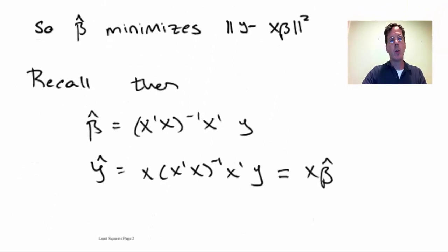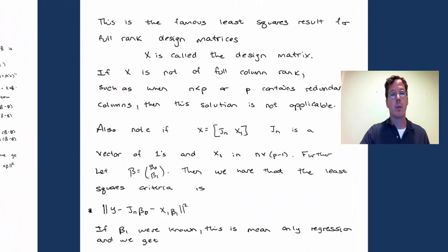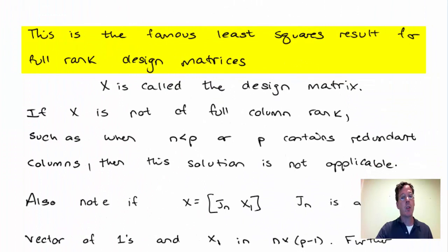So let's recall beta hat is x transpose x inverse x transpose y. Y hat is x times beta hat. This is the famous least squares result for full rank design matrices. Any PhD statistician can quote all these results off the top of their head. This is as bread and butter as it gets in the field of statistics. The matrix x is called the design matrix.